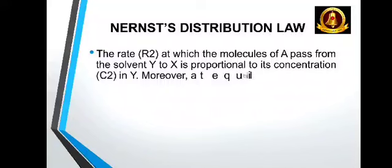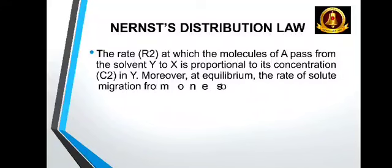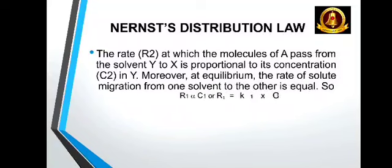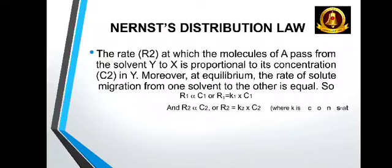Moreover, at equilibrium, the rate of solute migration from one solvent to the other is equal. So R1 is directly proportional to C1 or R2. R1 is equal to K1 into C1 or R2 is equal to K2 into C2, where K1 and K2 is constant. At equilibrium, R1 is equal to R2.